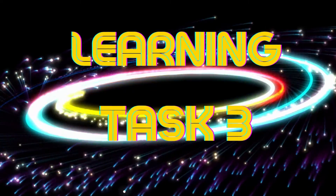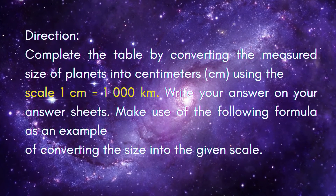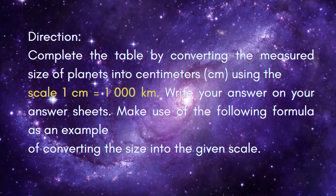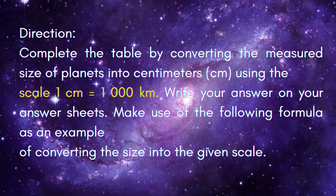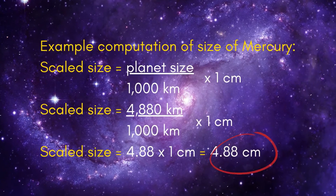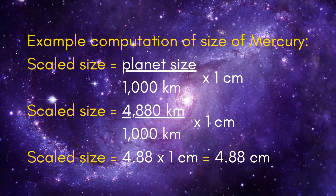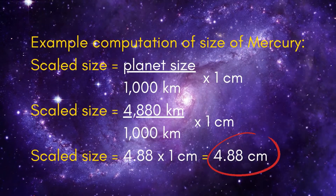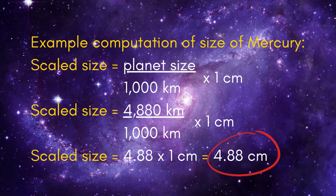After doing the two learning tasks, we are ready for Learning Task 3. Complete the table by converting the measured size of planets into centimeters using the scale: 1 centimeter equals 1,000 kilometers. Write your answers on your answer sheets using the formula: scale size equals planet size divided by 1,000 kilometers, times 1 centimeter. For example, Mercury has a planet size of 4,880 kilometers, giving a scale size of 4.88 centimeters.